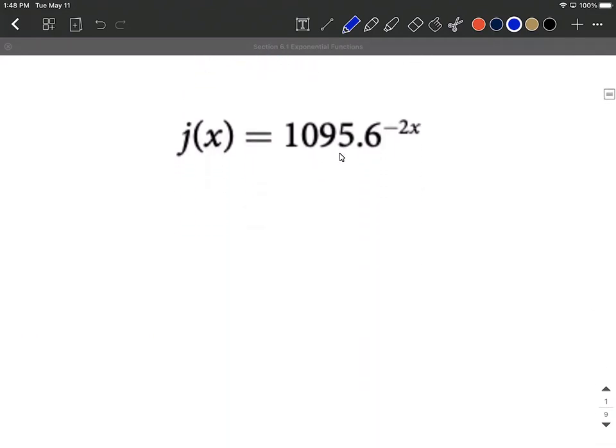j of x here, we do have a base. It's positive base. Our variable's up in the exponent. I know we have a negative up here in the exponent, but that's okay. That's still going to represent an exponential function.